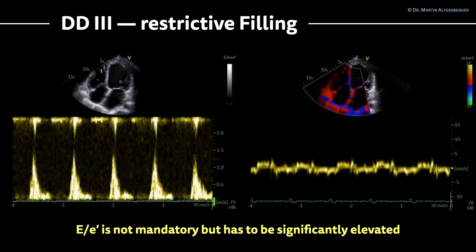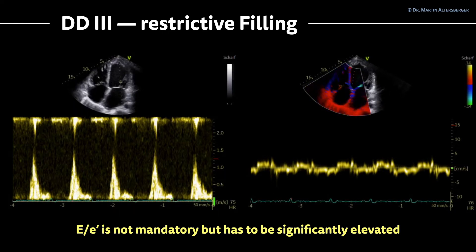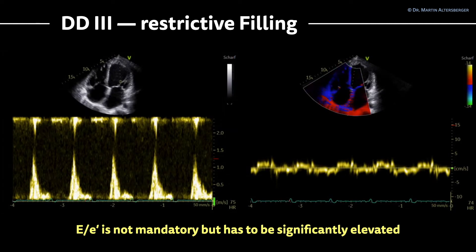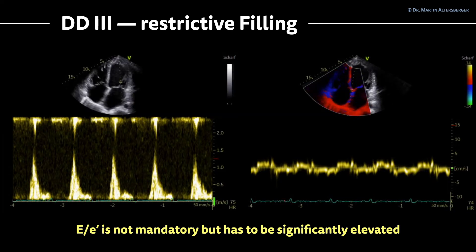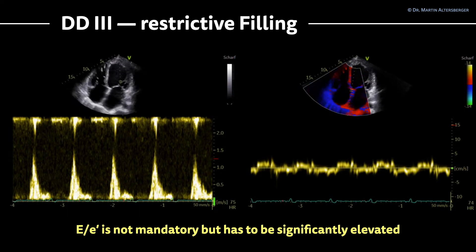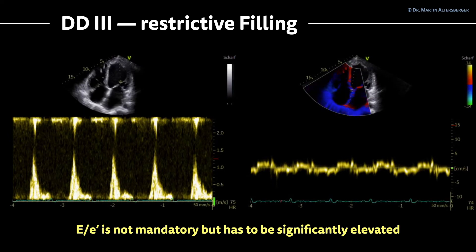The next steps are not really mandatory, but if you want to prove that this is really restrictive filling with significantly elevated filling pressures, you have to measure the E to E prime. It's not mandatory, but it has to be significantly elevated. If you have an E to A ratio above 2 and an E to E prime of only 6, for example, that cannot be restrictive filling. So always keep in mind to prove what you measure.